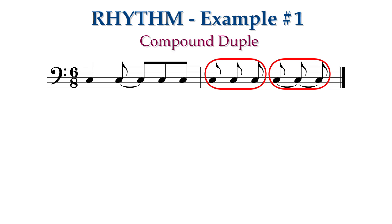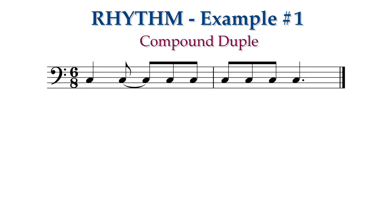In the second measure, the first beat has three separate eighth notes, but again we show they belong to the same beat using a beam. The last beat has three eighth notes that are all tied together, so we combine them into a single note value, a dotted quarter note.